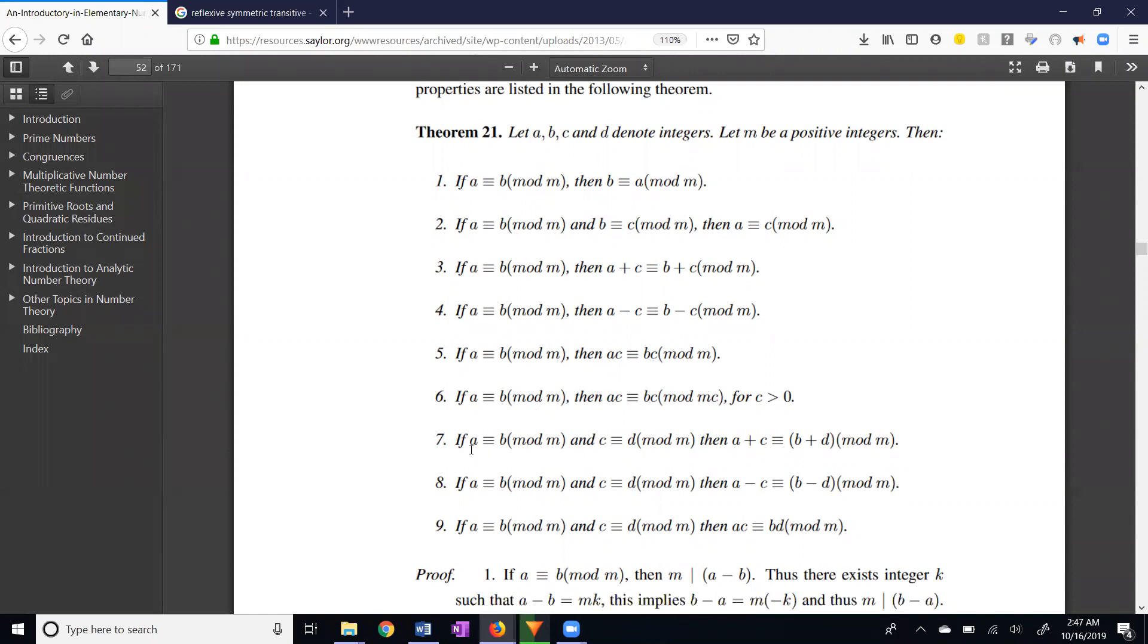Property 7 is kind of an addition property of congruence. 8 is a subtraction property of congruence. And 9 is a multiplication property of congruence. You'll notice what's glaringly missing: the division property. It turns out that you cannot randomly take a congruence and divide both sides by a number.